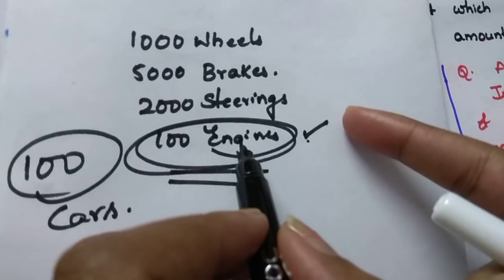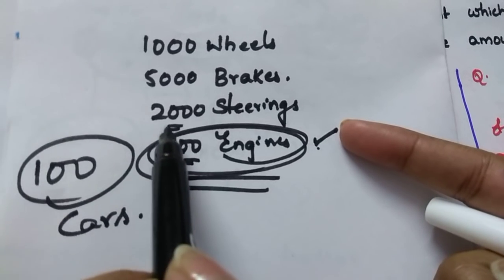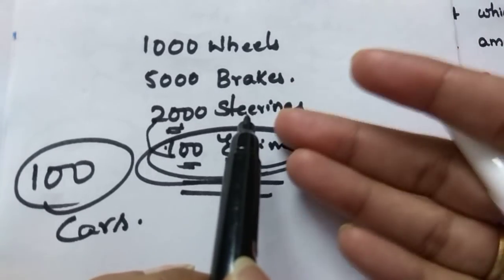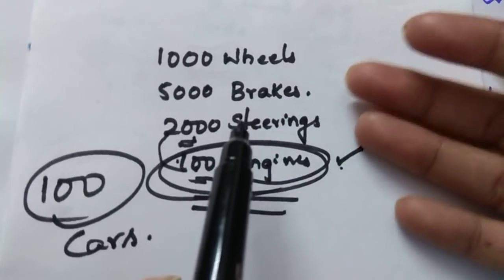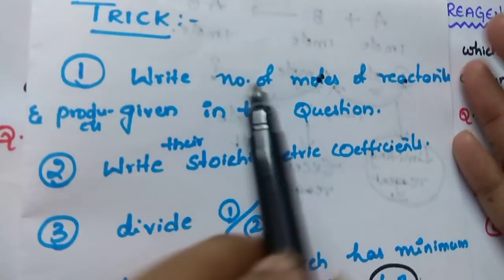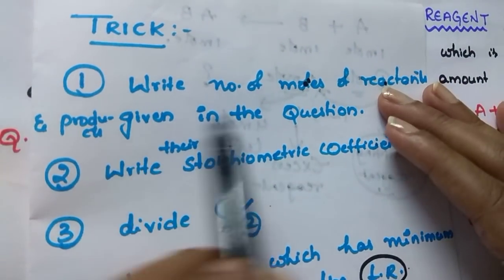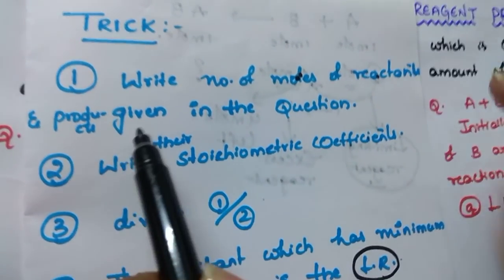Per one car we use one steering, so 100 cars means 100 steerings are used and the remaining 1900 steerings are extra — those are the excess reagent. Whatever is left, we say those reactants are in excess. Now let me explain the trick. While solving the numericals, what you have to do first is write the number of moles of reactants and products given in the question.